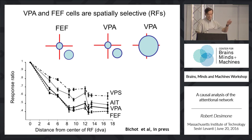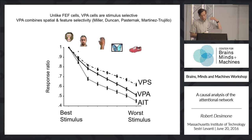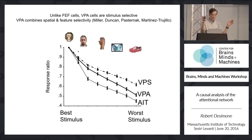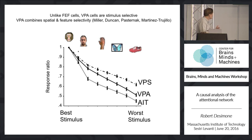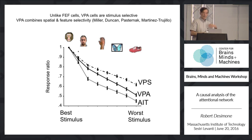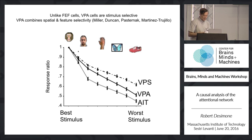In addition to having FEF-type receptive fields, VPA cells also carry information about the object — unlike frontal eye field cells, which only care about where the object is or whether it's a target for an eye movement, not the nature of the object. Comparing VPA with anterior inferior temporal cortex, there's actually fairly comparable object selectivity in VPA cells, and somewhat less but significant object selectivity in other parts of prefrontal cortex.